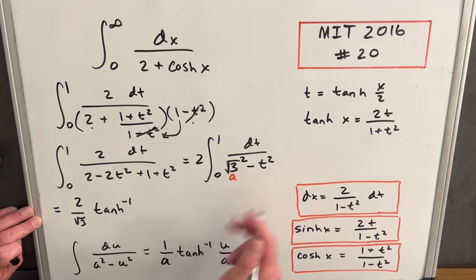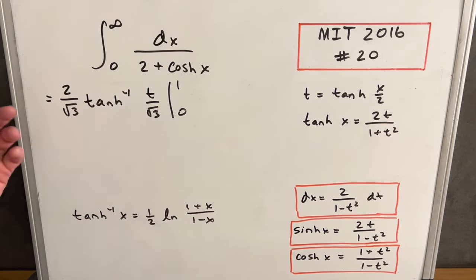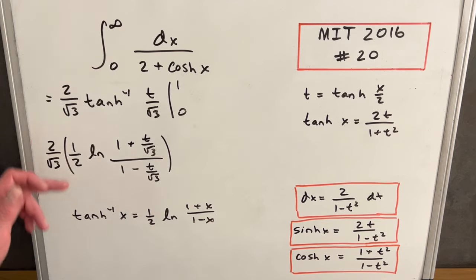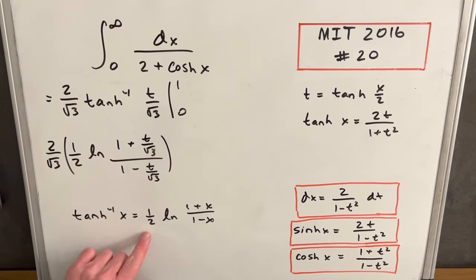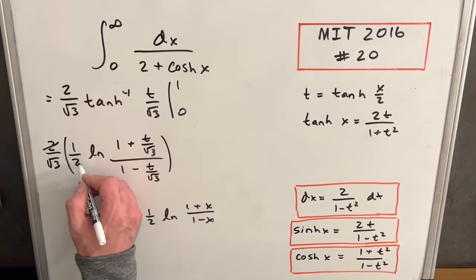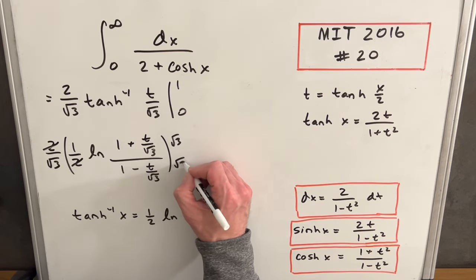Applying the formula with a = √3 and u = t, we get 2 over √3 times tanh inverse of t over √3, evaluated from 0 to 1. Before evaluating, I don't want to work with the inverse hyperbolic tangent directly, so I'll use another formula to transform it into a natural logarithm, which will be easier to deal with. Using that formula, I convert the inverse tanh into a natural log, then simplify: multiplying 2 over √3 by one-half gives 1 over √3, and inside the log I multiply through by √3.